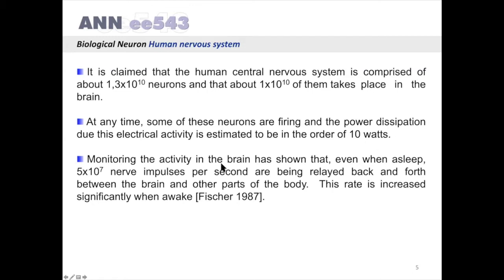Monitoring the activity in the brain has shown that, even when asleep, 5 times 10 to the power 7 nerve impulses per second are being relayed back and forth between the brain and other parts of the body. This rate is increased significantly when awake.